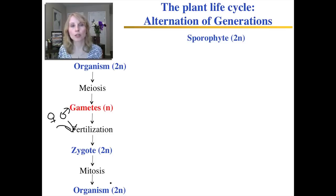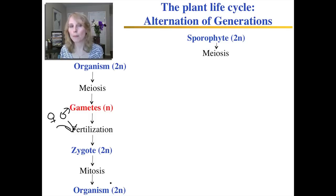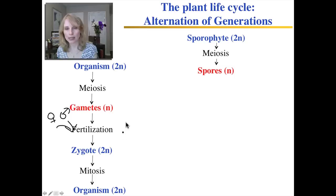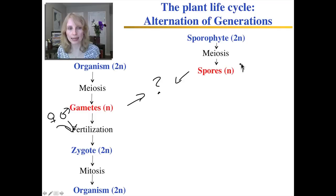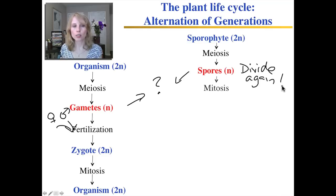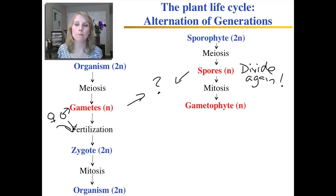Now let's look at plants. The plant multicellular diploid stage is the sporophyte. Just like in animals, certain special cells can undergo meiosis. But this time, meiosis produces haploid spores, not gametes. Both gametes and spores are haploid, but they differ: once you make gametes, they cannot divide again — they're done. Spores, on the other hand, can divide again. So spores will divide by mitosis to produce the multicellular haploid gametophyte stage.